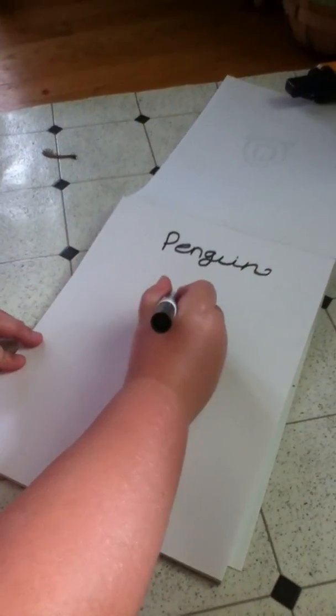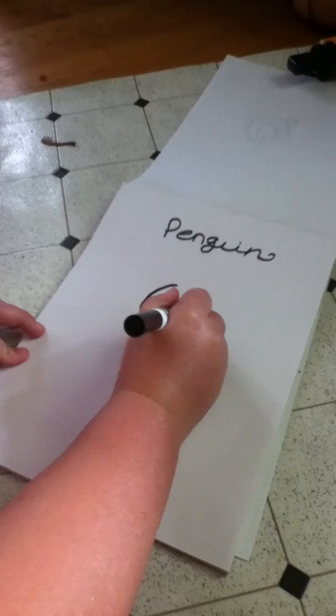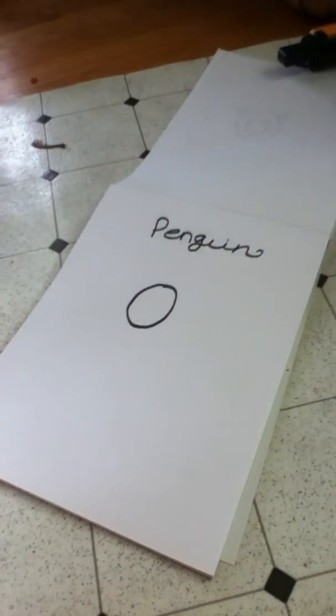First, you want to draw like an oval. Okay, now you've got your oval.